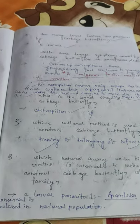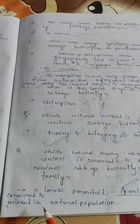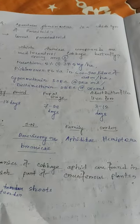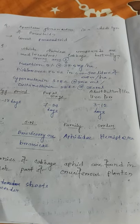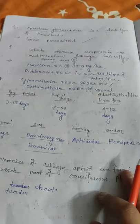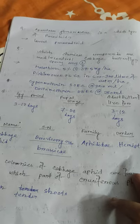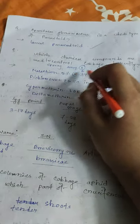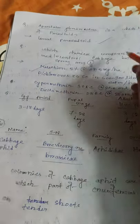Biological control for cabbage butterfly: the larval parasitoid Apanteles glomeratus is conserved and released in natural populations. It is a larval parasitoid used to control the cabbage butterfly of cruciferous plants.